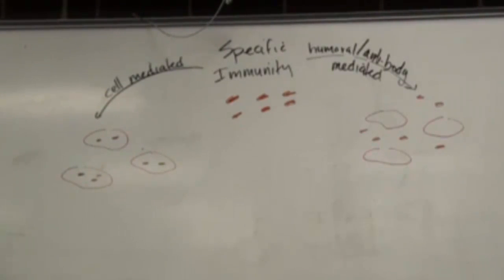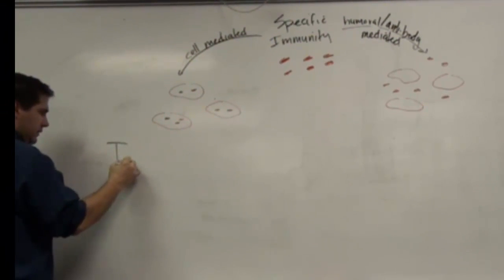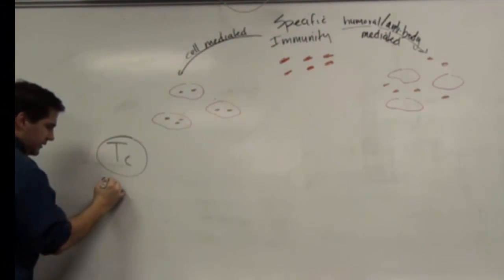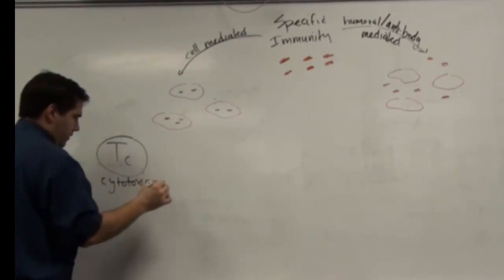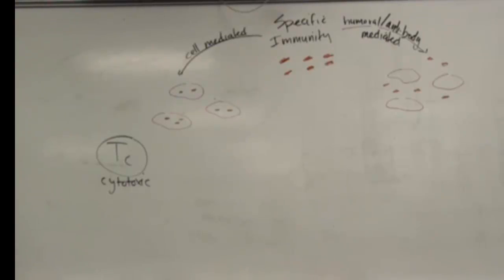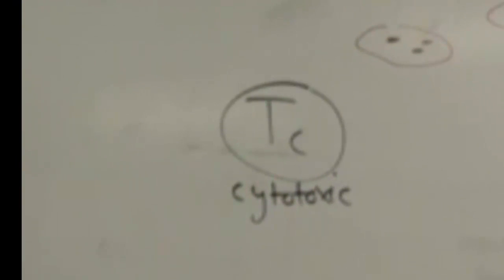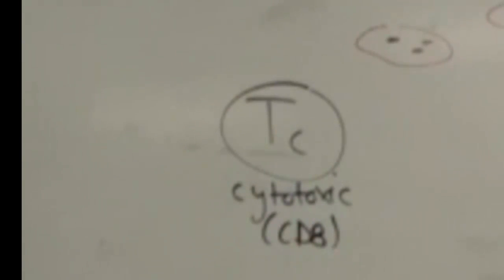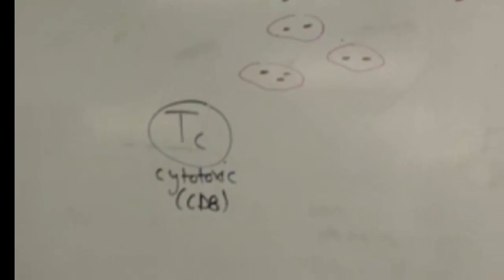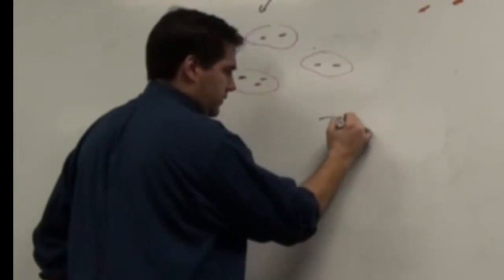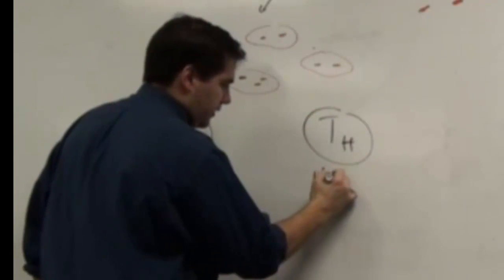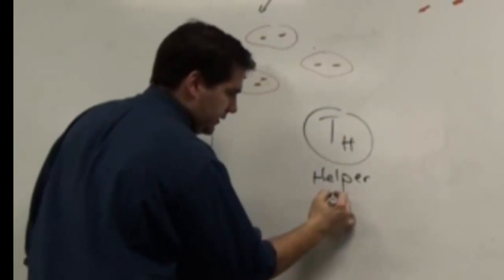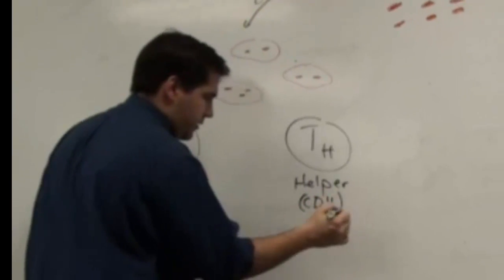Over here in cell mediated, there's two types of cells. TC, and this T stands for cytotoxic. Sometimes in science, two different groups will find the same cell around the same time and they'll name it two different things. And since they both found it at the same time, both names stick. In some textbooks or sources, you'll see the TC cell called the CD8 cell. There's another cell called the T helper cell. So the H stands for helper. And this guy is called the CD4 cell.